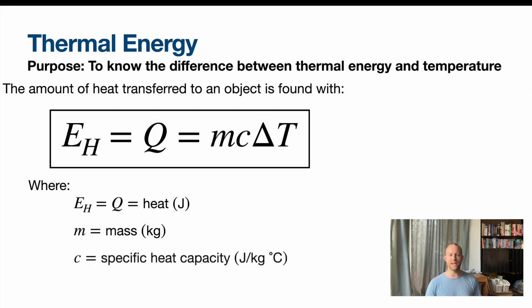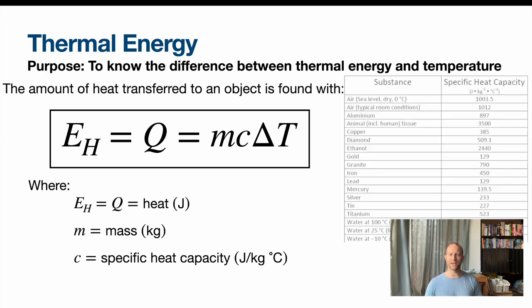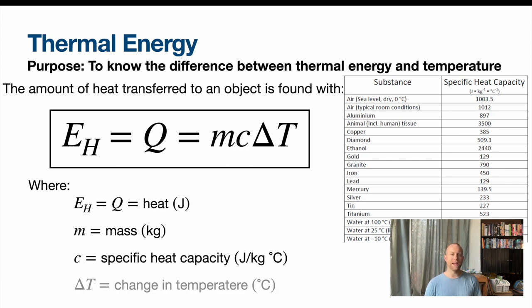C is something called the specific heat capacity. This is another constant. So on your formula sheet, you're given a table that looks like this. It's a list of a bunch of specific heat capacities for different objects. So you can check on there to see which specific heat refers to which thing. And delta T is your change in temperature. So this is how temperature relates to heat. There's an equation that relates the two of those together.